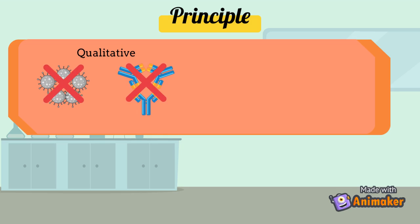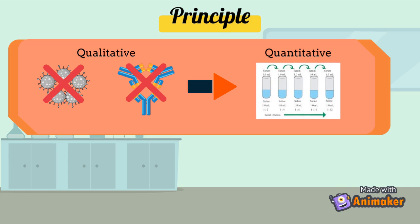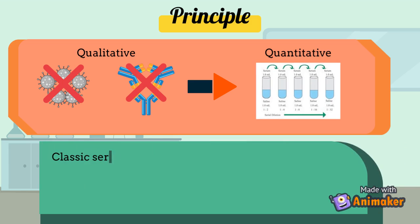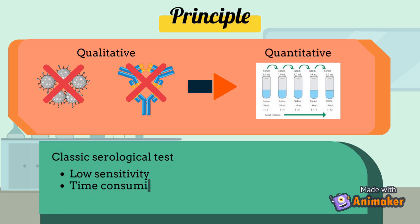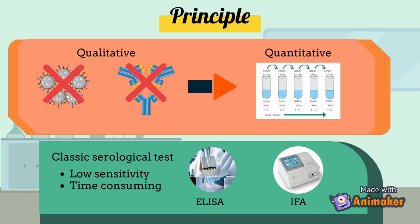However, this test can be converted to a quantitative test by using antibody titer or serial dilution of the patient's serum. In addition, CFT is least chosen for diagnostic testing as it is a classic serological test. It has low sensitivity and consumes more time when performing the procedure. Consequently, ELISA and IFA are more preferable for diagnostic testing.